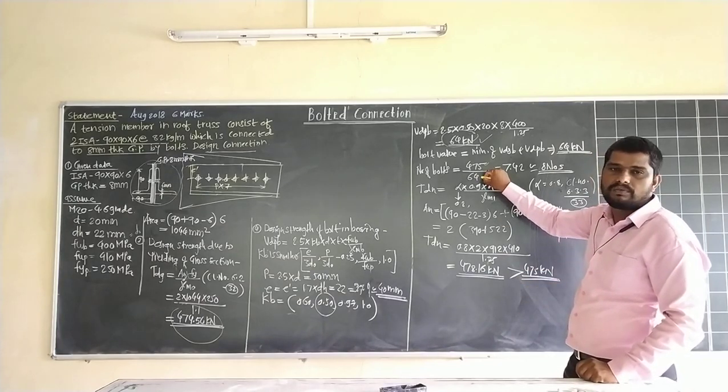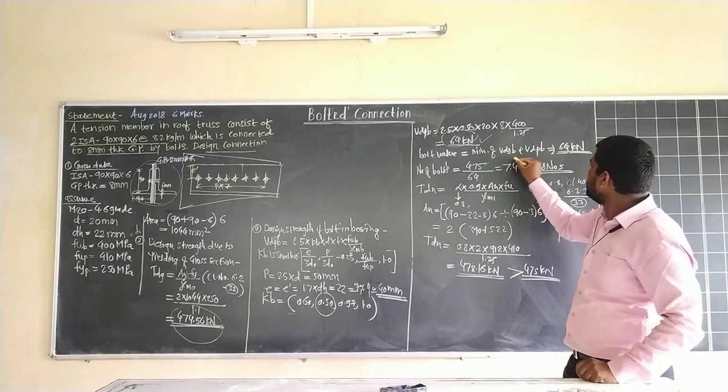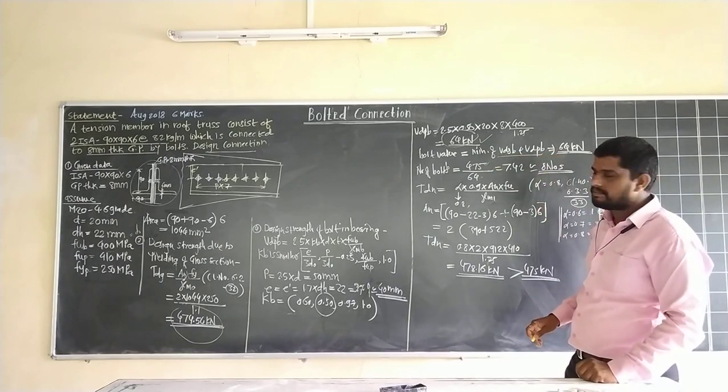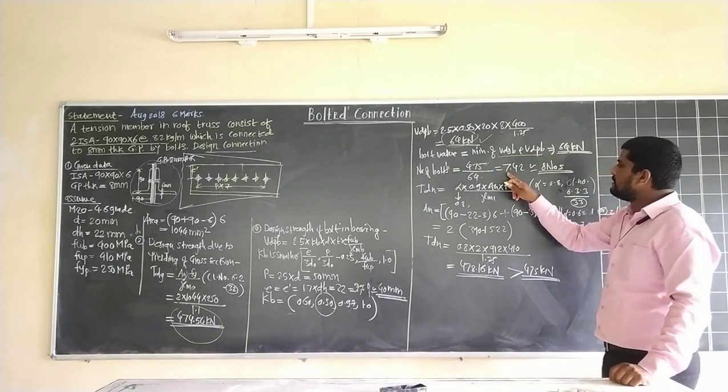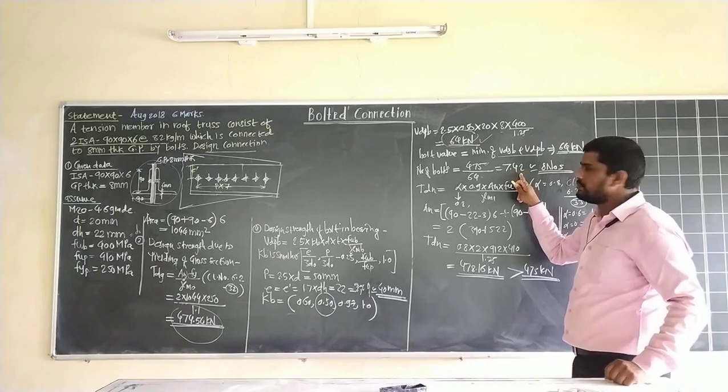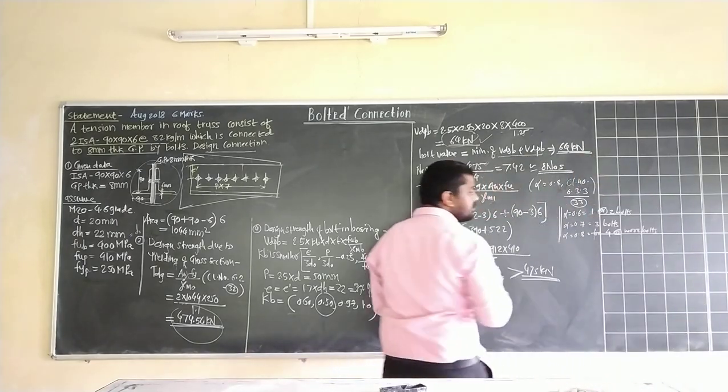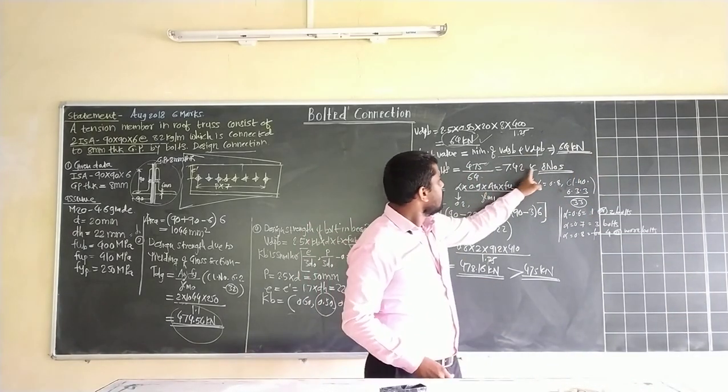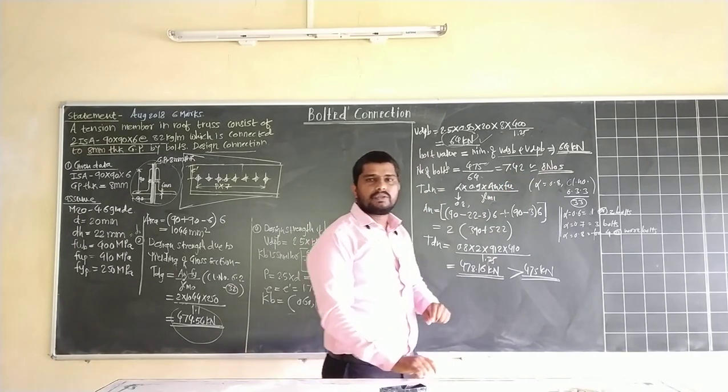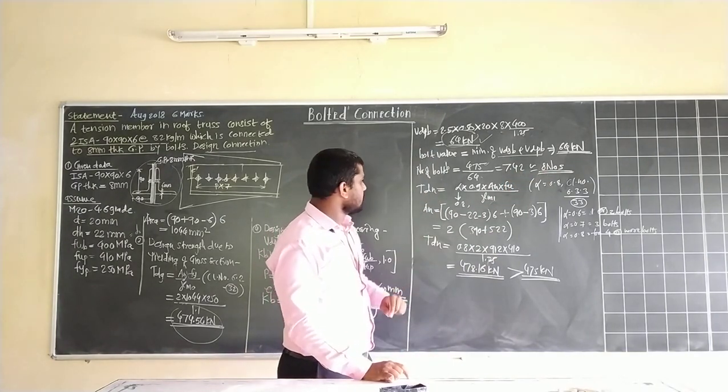We got 475 divided by 64 (minimum value for bolt out of V_dSP and V_dPB), equals 7.42. This is approximately 8 number of bolts required for this connection.